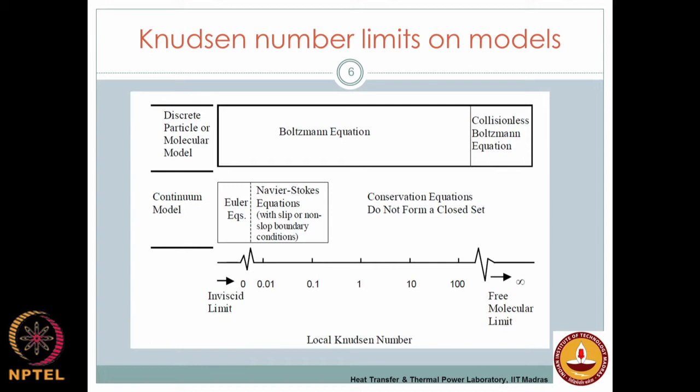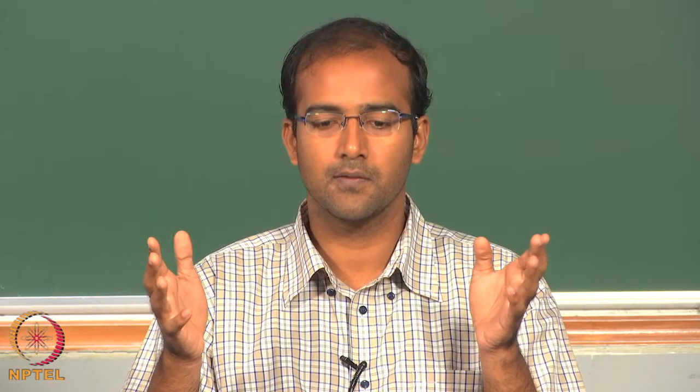If the Knudsen number exceeds 0.1, even the continuum approximation outside breaks down and no form of continuum approximation can be used. In that case, what is used — as mentioned previously — is the Boltzmann transport equation, which is a subcontinuum model that can also be applied at the continuum level. We can actually derive continuum equations from the Boltzmann equation; it is the most fundamental equation.